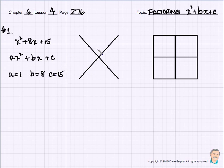In our crisscross method, we have the product A times C, which gives us 15. We put the coefficient B, which is 8, down at the bottom. We're looking for two factors whose product is 15 and whose sum is 8.